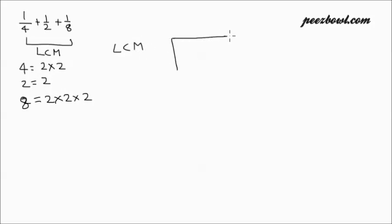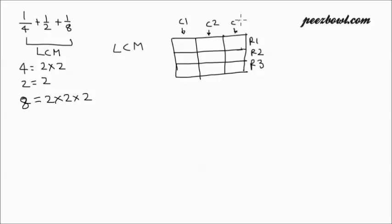We are going to draw a simple table which will have three different rows and three different columns. This is first row, this one is second row, this one is third row, I call it R1, R2 and R3. Same way vertically this is first column, this is column number 2 and this one is column number 3.